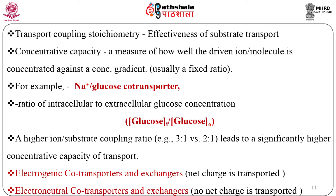Transport coupling stoichiometry determines the effectiveness of substrate transport against the concentration gradient. For both co-transporters and exchangers, the effectiveness can be defined by concentrative capacity — a measure of how well the driven ion or molecule is concentrated against the concentration gradient. For example, for the Na+/glucose co-transporter, concentrative capacity can be expressed as a ratio of intracellular to extracellular glucose concentration, indicating how well SGLT can move glucose inside the cell against the gradient. For any given transporter, the coupling stoichiometry is usually a fixed ratio, and a higher coupling ratio leads to significantly higher concentrative capacity.